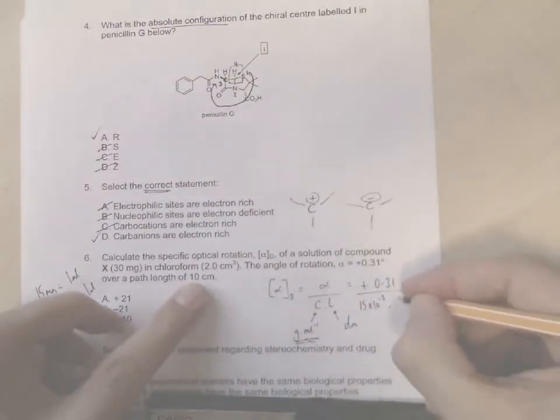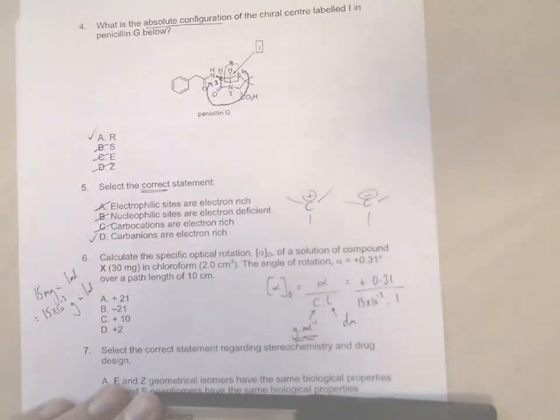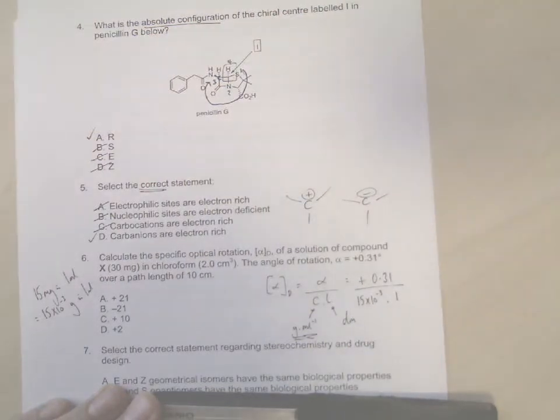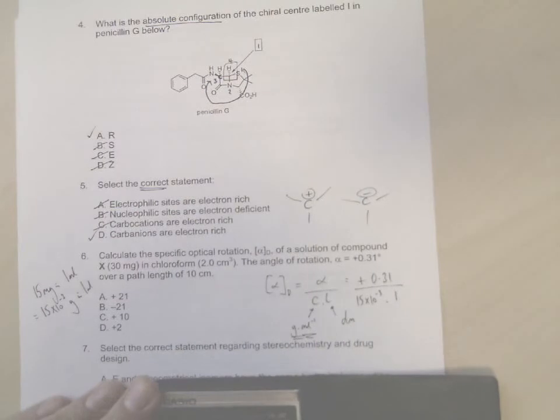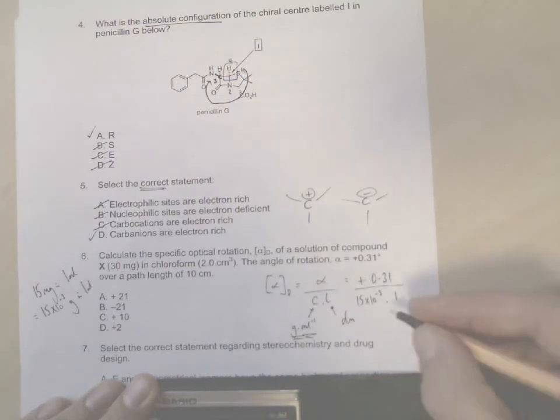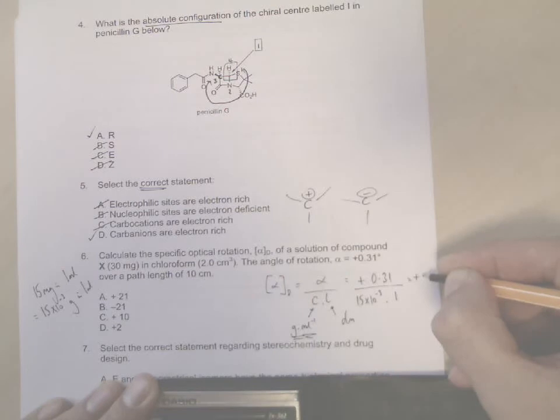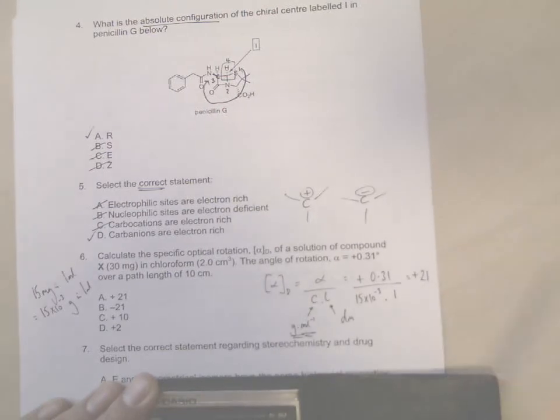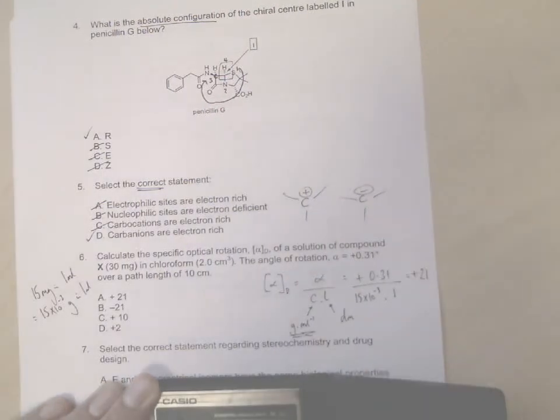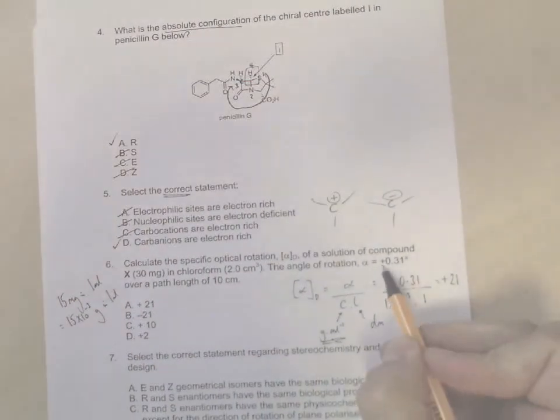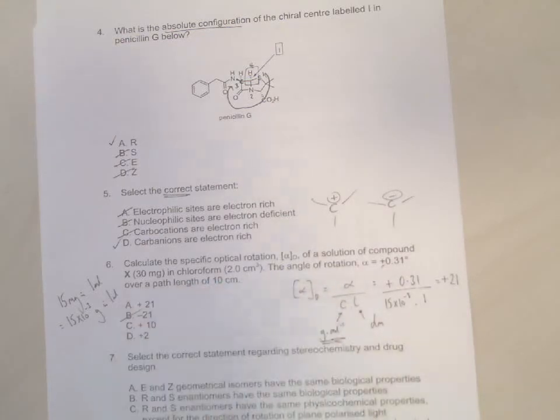So we have, putting the numbers in: 0.31, just doing this on the calculator as I expect you would do, divided by 15 times 10 to the minus 3, and that gives you an answer of plus roughly plus 21. Okay, and so because our alpha is plus, our answer is plus. So in this case you can get rid of B straight away.